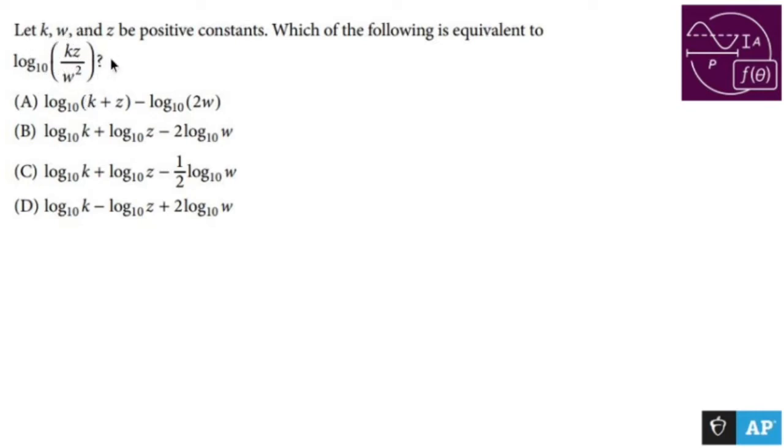Whenever you're looking to expand logarithms, you're looking at division, exponents, and multiplication. The first thing you want to rip apart first is the division. So if I'm dividing something inside of a log, it must be because I subtracted separate logs first. So I'm going to turn this into log base 10 of kz minus log base 10 of w squared.